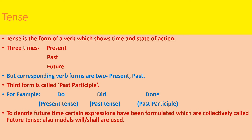Before commencing on the past tense, let me tell you what a tense means. Students, tense is the form of a verb which shows time and state of action. It means that verb — because verb is an action word — and when this action word shows the time of action also, then it becomes tense.